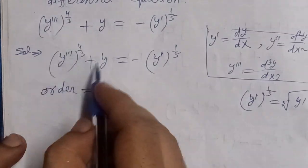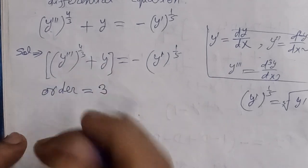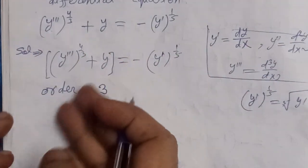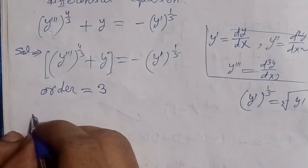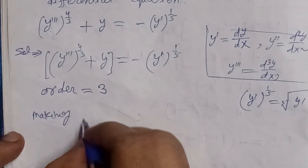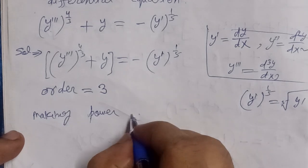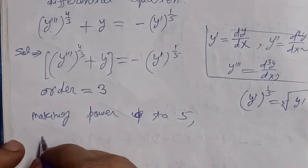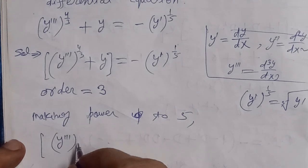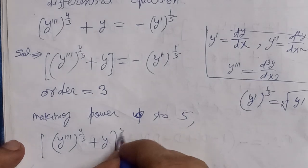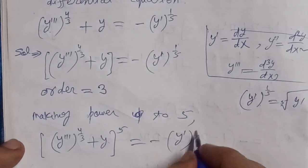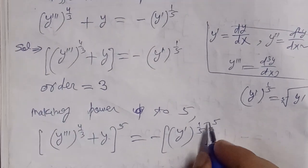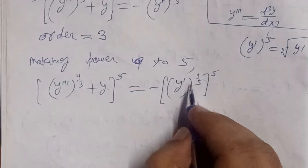So first, looking at the left-hand side, we raise the whole equation to the power 5 on both sides. Making power 5 here — the bracket raised to power 5. So y triple dash whole power 4 by 3 plus y, whole power 5, equals minus y dash whole power 1 by 5, raised to power 5. On the right-hand side, the 1/5 and 5 cancel and become 1, so the radical is removed.